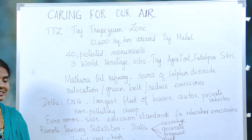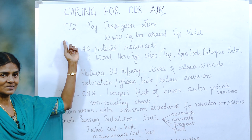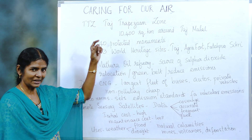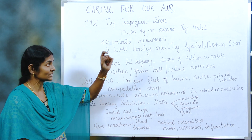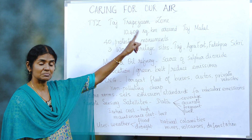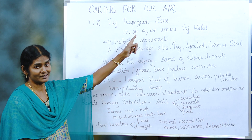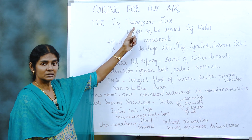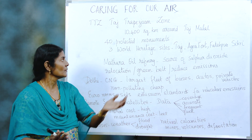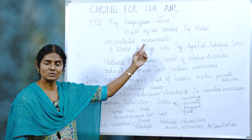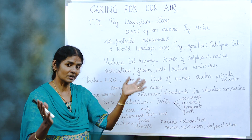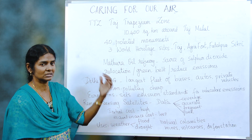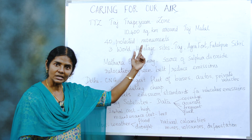The first one is the Taj Trapezium Zone (TTZ). They would ask you what TTZ stands for — you should be able to identify it correctly. It is not a triangle but a trapezium, which has a different shape. This zone is around the Taj Mahal, covering about 10,400 square kilometers, in the shape of a trapezium.